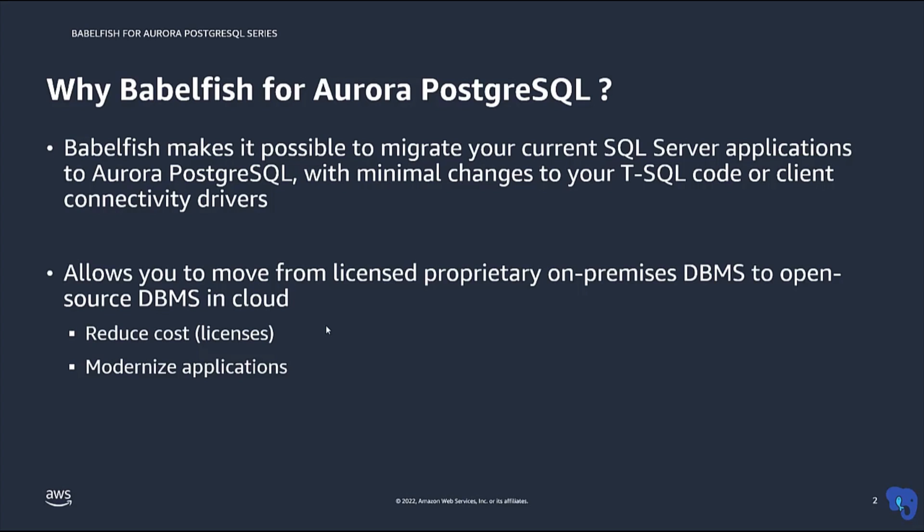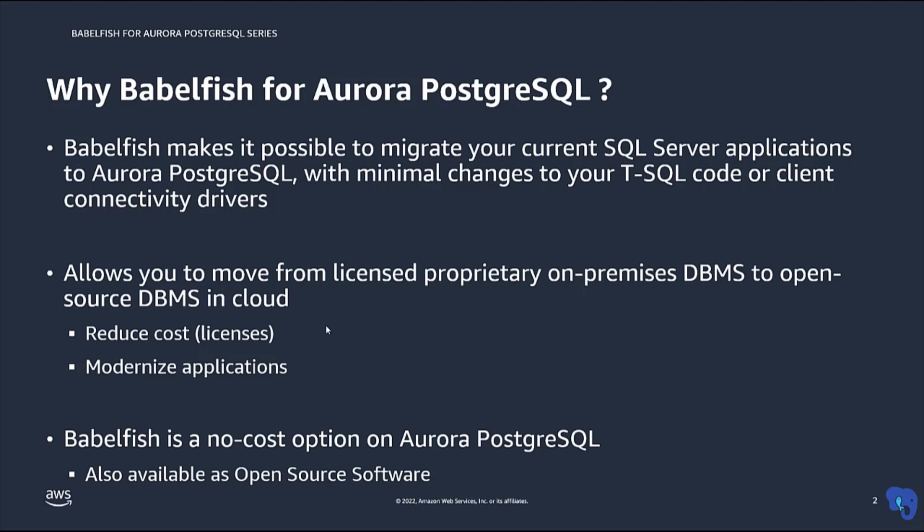Moving from a proprietary on-premises database to an open source database in the cloud is part of your application landscape modernization that everybody needs to do at some point. But Babelfish also allows you to break free from the database licenses you are currently paying, because Aurora Postgres has a much more attractive cost model that does not involve traditional licensing. Babelfish is available as an option with Aurora Postgres at no additional cost. You can also use the open source version of Babelfish, which is published separately at GitHub.